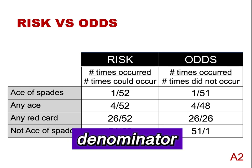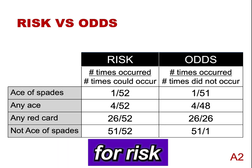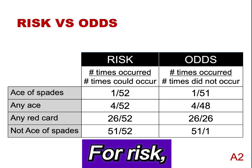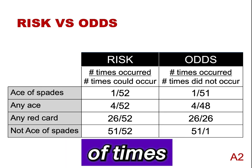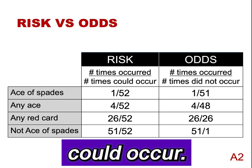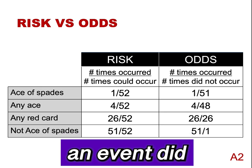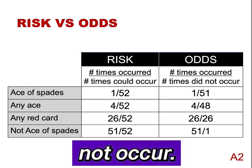Notice the difference in the denominator for risk and odds. For risk, it is the number of times an event could occur. For odds, it is the number of times an event did not occur.